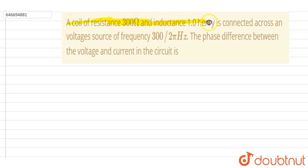The phase difference between the voltage and the current in the circuit is. So if you see here, the inductance is given and frequency is given.